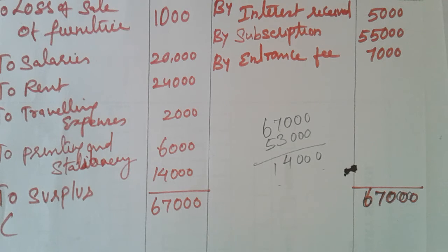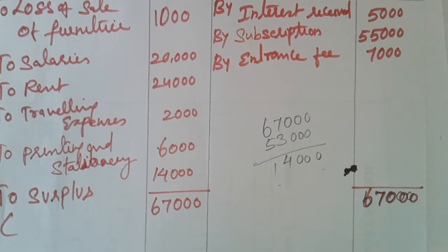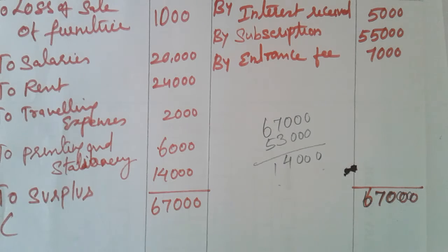For the receipt and payment account, capital receipts and capital expenditure — items like investment made and sports equipment purchased — are capital expenditure and are not included in the income and expenditure account.